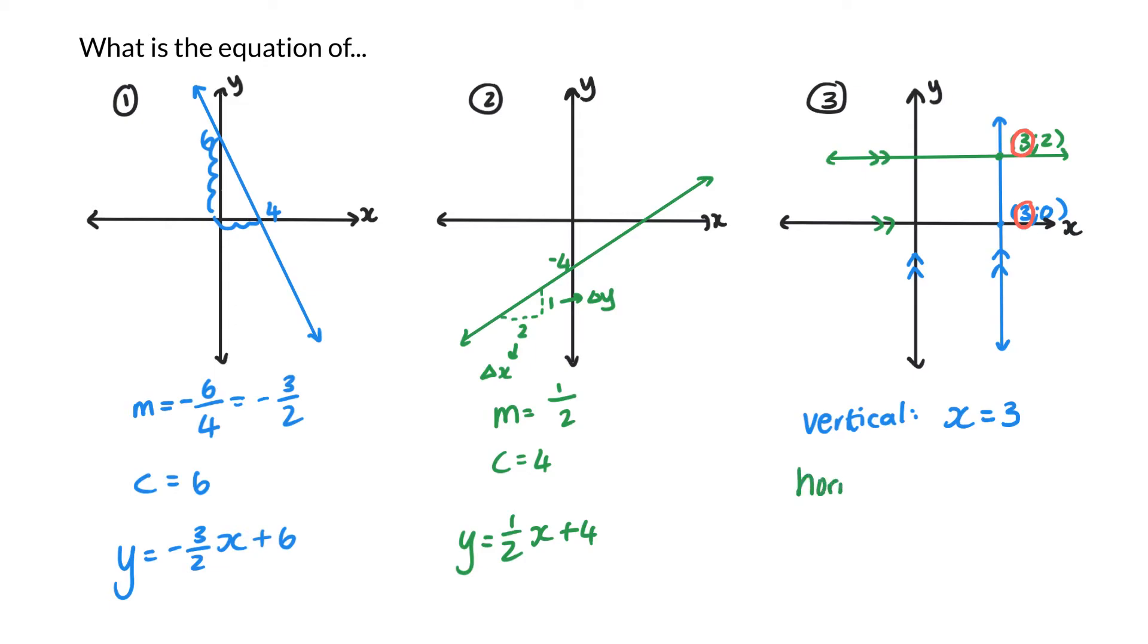For my horizontal line, my gradient will be 0, so y equals 0x, and my y-intercept is going to be 2. Because it doesn't matter any point I choose on this graph, the y value will always be 2.